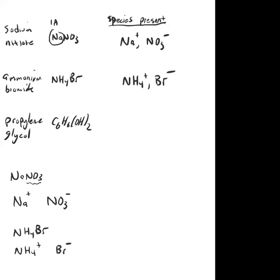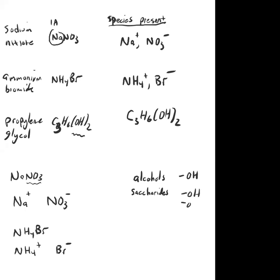The last one is propylene glycol — there's no ammonium and no metal, so it must be a molecular compound. If it's molecular, it doesn't break up into ions. The problem tells you everything is soluble, and alcohols — and glycols even more so — definitely dissolve in water. So you just write C3H6(OH)2. Alcohols and sugars (saccharides), which have OH groups attached, all dissolve in water but don't form ions.